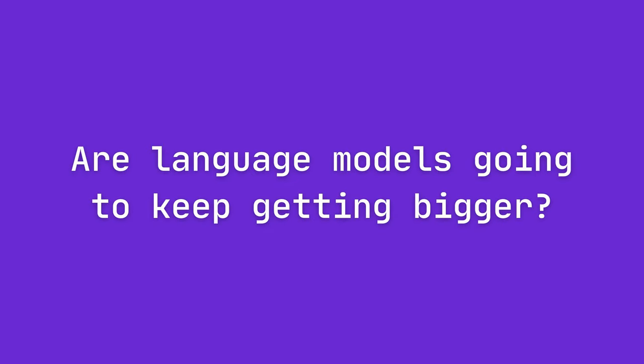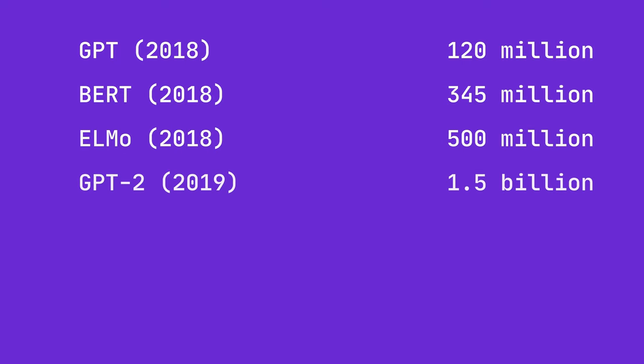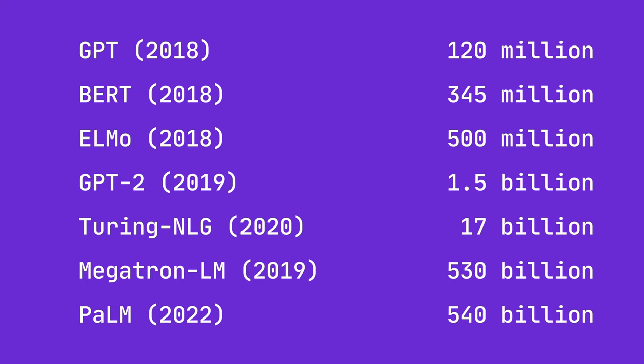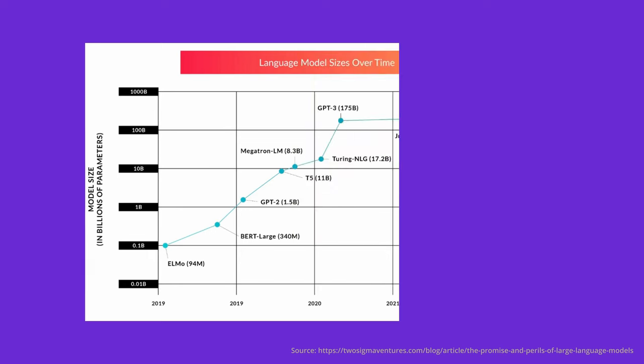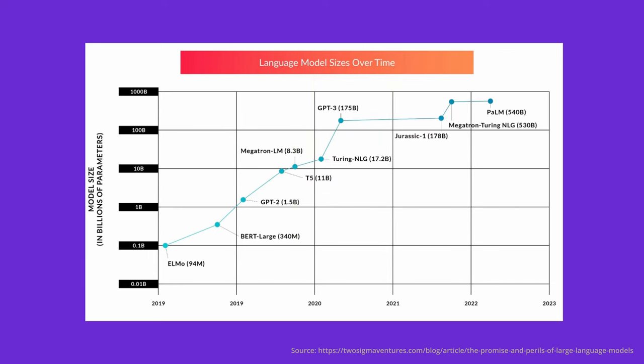Are language models going to keep getting bigger? In recent years, the development of language models has been characterized by a dramatic increase in size as measured by number of parameters. This trend began with models like the original GPT and ELMo, which had millions of parameters, and progressed to models like BERT and GPT-2 with hundreds of millions. Some of the latest models like Megatron, Turing NLG, and Google's PaLM have already surpassed 500 billion parameters. In the span of just the last four years, the size of LLMs has repeatedly doubled every two and a half months on average.